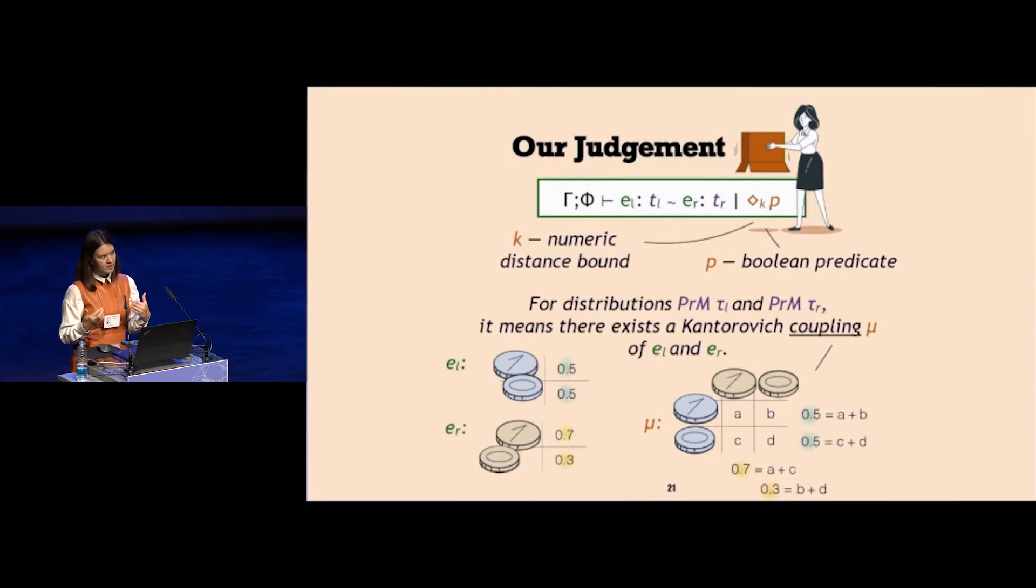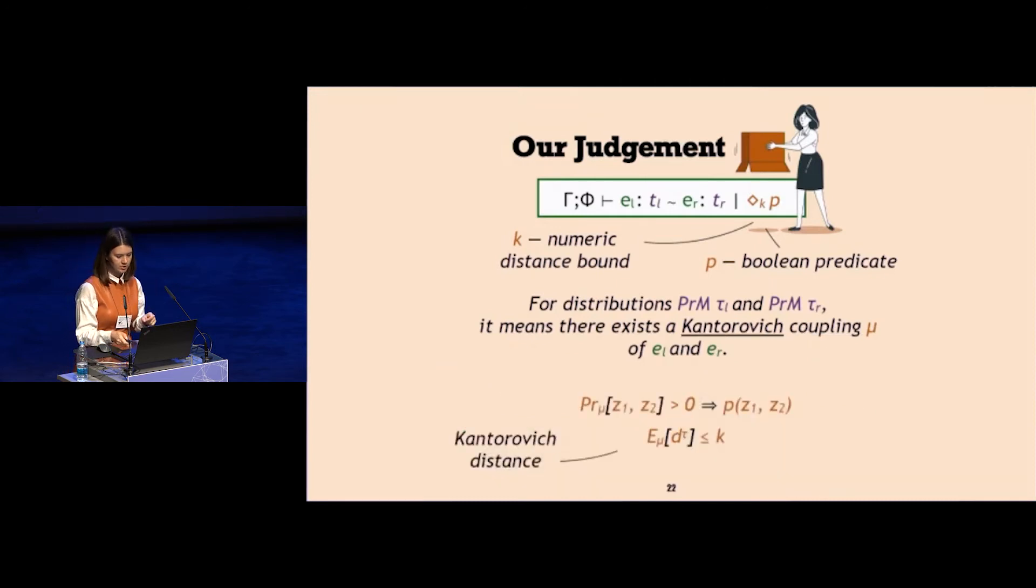In addition to be a correct coupling, this distribution on pairs needs to satisfy four more equations here, which intuitively mean that if you ignore the result of one coin, this distribution will be equal to our initial. So if we ignore the golden coin, then we just add the probabilities in the rows, and it should be one half and one half.